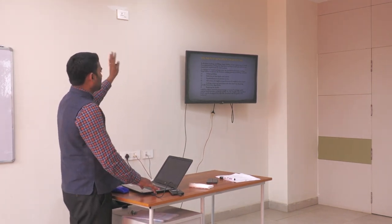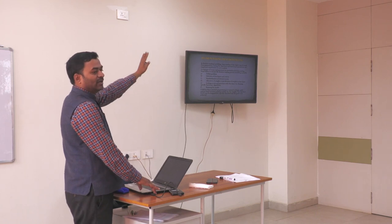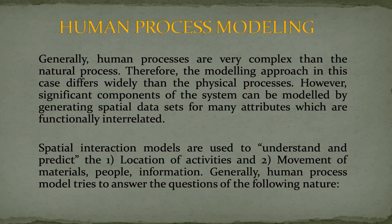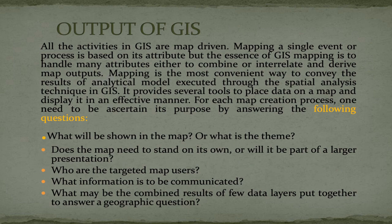Through a GIS-based graphical user interface, it will show you the decision-making output in a linear graphical mode on a map. We also have human processing models, but I'm skipping those. Regarding the output of GIS — all activities in GIS are map-driven. Whatever you speak, plan, or monitor, everything should be in mappable form. The map speaks everything.